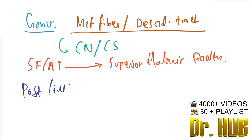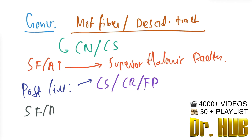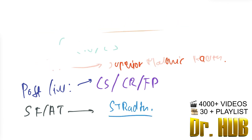Under the posterior limb, the motor fibers and descending tracts include the corticospinal, corticorubral, and frontopontine. The sensory fibers and ascending tracts include the superior thalamic radiation.